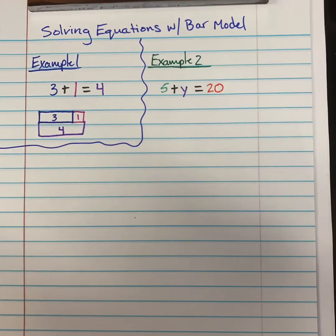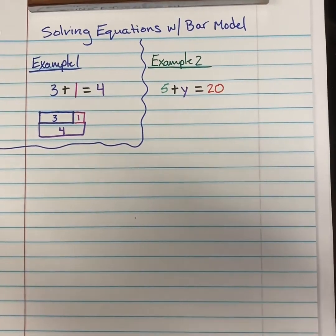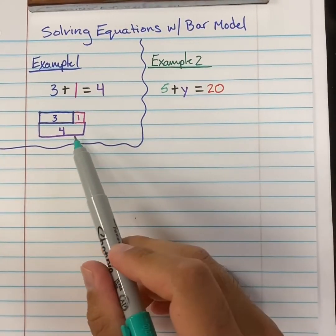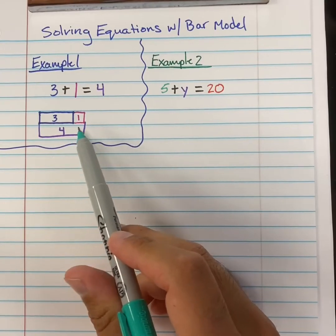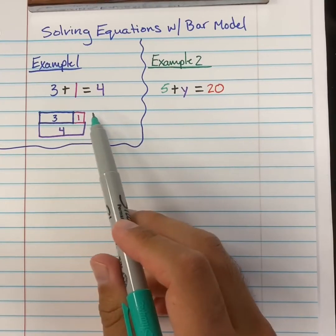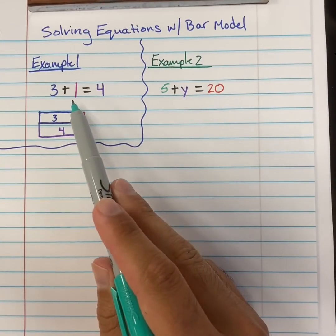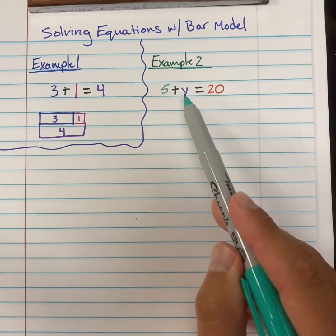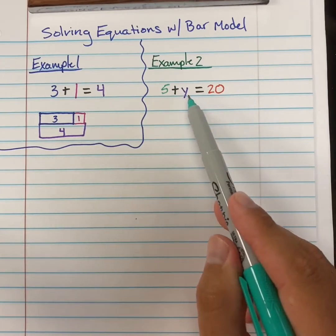In our second example, we are going to be doing 5 plus y is equal to 20. You can see that this time we have a variable that we're going to have to solve for, and we're going to show you how you can use this to figure out the answer to the equation. We're going to draw boxes just like we did before, but we don't know the value of every single number. We have an unknown — we have a variable.